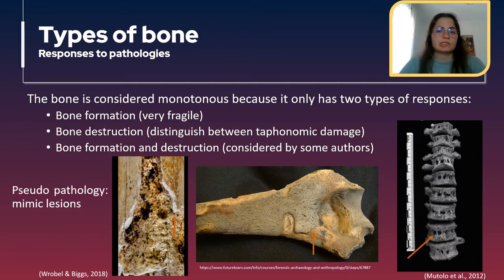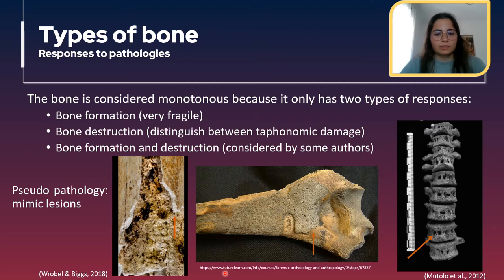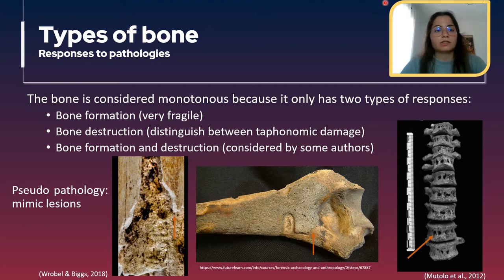Now we will see the types of responses that bone has to pathologists. Bone is considered monotonous because it only has two ways of responding: by forming and destructing bone. Some investigators consider a third response — bone formation and destruction at the same time. In this image, this is the distal part of the humerus in a posterior view. In this zone you can see the original bone, and all of this here is new bone formation. This new bone is very fragile and often falls when handling. In this other image, you can see bone destruction — these holes in the vertebral body.